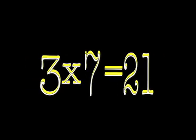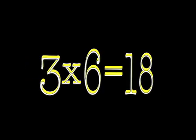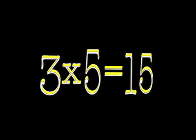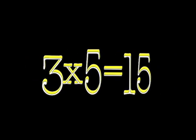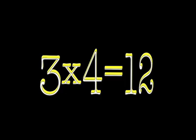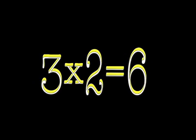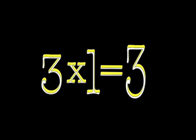Three times seven is twenty-one. Three times six is eighteen. Three times five is fifteen. Three times four is twelve. Three times three is nine. 3 × 2 is 6. 3 × 1 is 3.